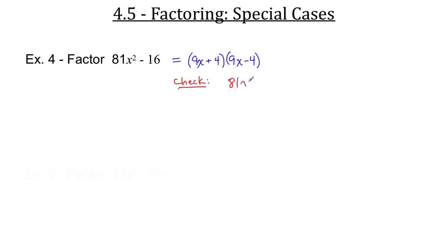9x times 9x is 81x². 9x times negative 4 is negative 36x. Positive 4 times 9x is positive 36x. So we take a look here. Effectively, what's happening is that's nothing. That's 0. 4 times negative 4 is the negative 16. So that's how we got a 0 as our b value. And so it worked.